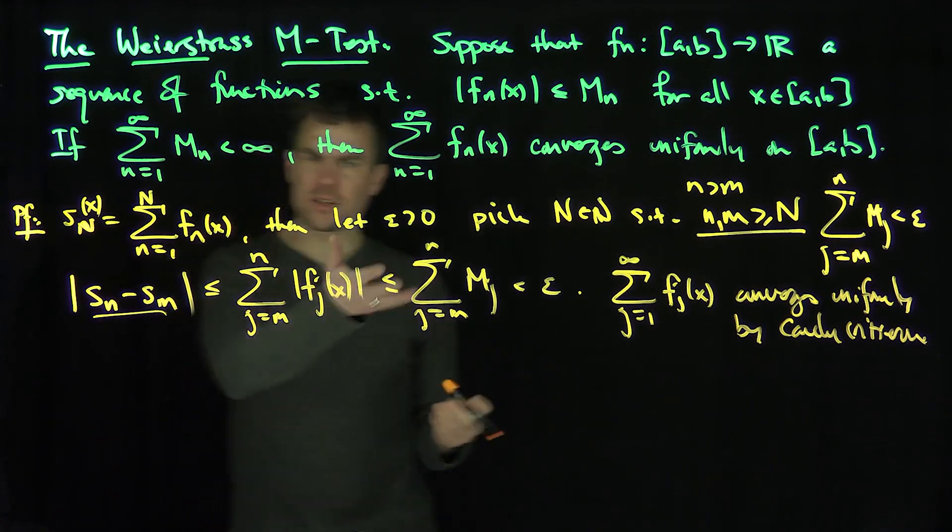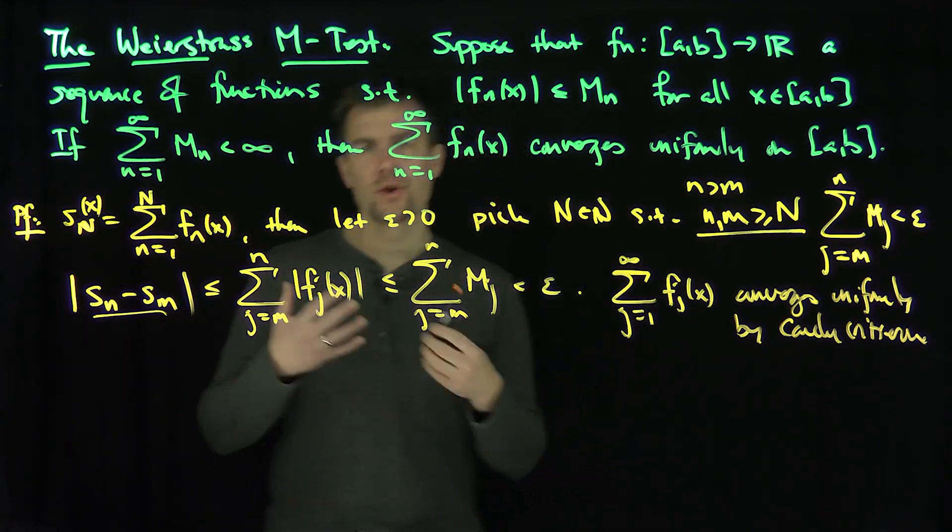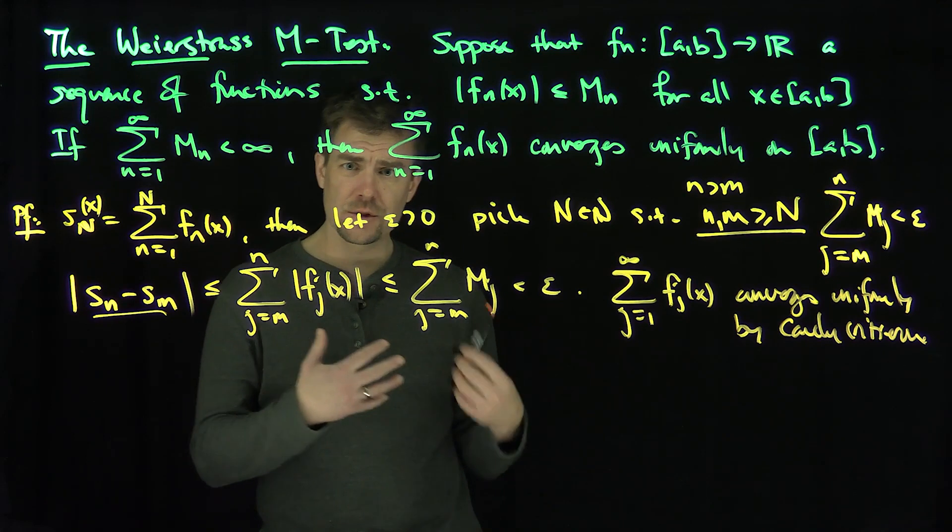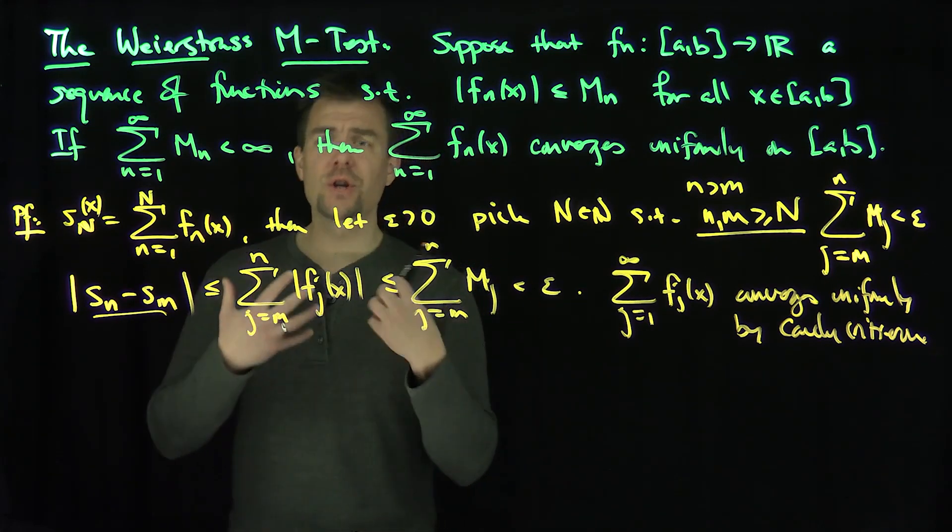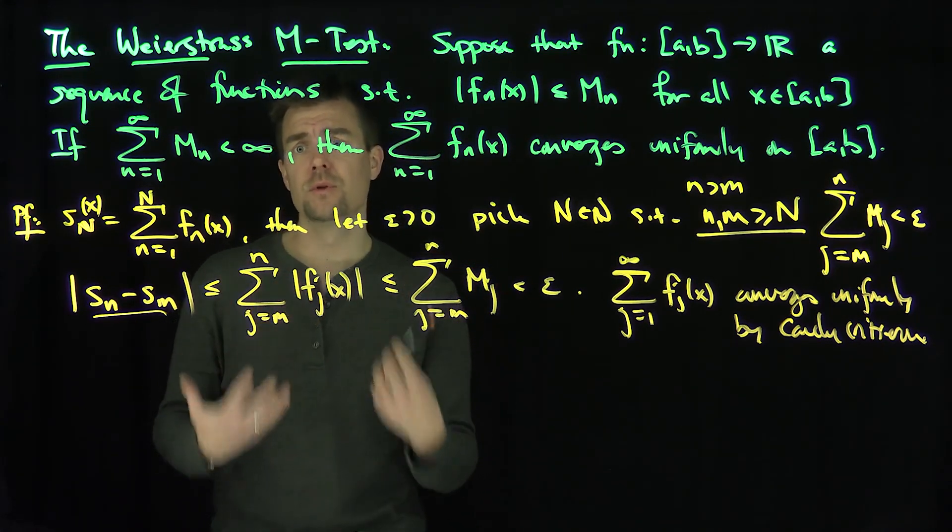Okay, the proof is actually fairly short. It just follows from the fact that your partial sums are majorized by a convergent series. Since you're majorized by a convergent series, you get a uniform Cauchy estimate, and that proves the uniform convergence.